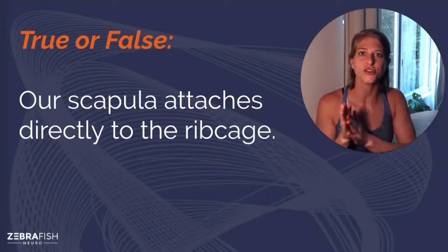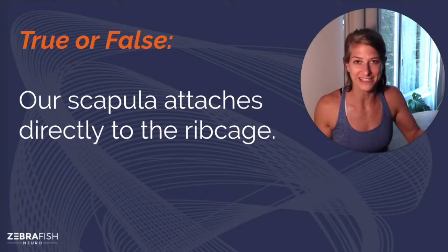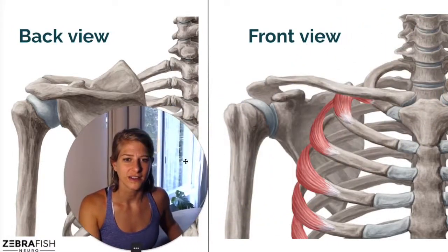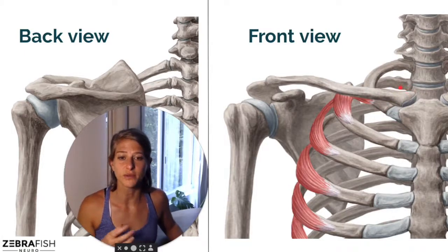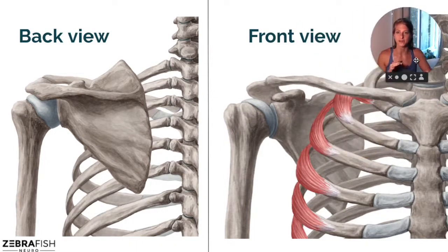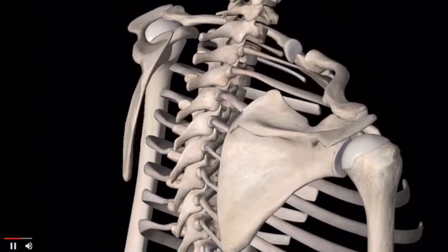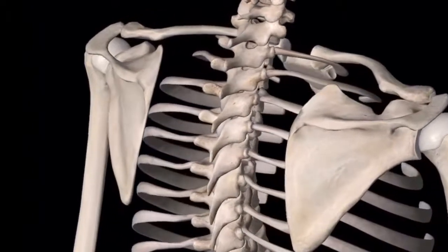Another trivia question — true or false: our scapula attaches directly to the rib cage. That statement is actually false. Our shoulder complex attaches to the trunk through our collarbone, right to the sternum — it's the only bony articulation that our shoulder has to our trunk. The scapula is sort of this elusive joint that floats over the rib cage, held in place by muscles. The video shows how the bone sort of floats — there's no actual bone-on-bone joint there, it just glides over the rib cage.